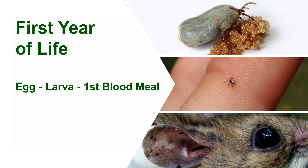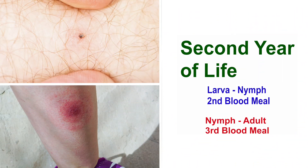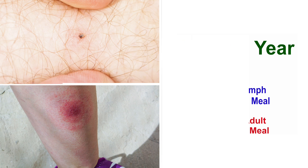Mice are the primary reservoir hosts for the organisms that cause disease. The tick larvae molt to nymphs during the fall or the following spring. When the nymphs feed late spring or early summer, their hosts may become infected. Humans are accidental hosts. Most cases of Lyme occur from late spring through summer. Of all tick stages, the nymph is the primary vector for transmission of disease to humans.